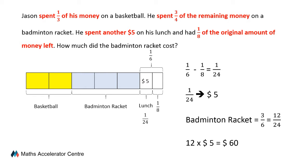So again, we went through three major steps. First, we highlighted the keywords. Then, we transformed the keywords into useful information represented by the model. Then, from the model, we did our calculation and analysis and arrived at the answer — the cost of the badminton racket is sixty dollars. Let us now move on to the third question.